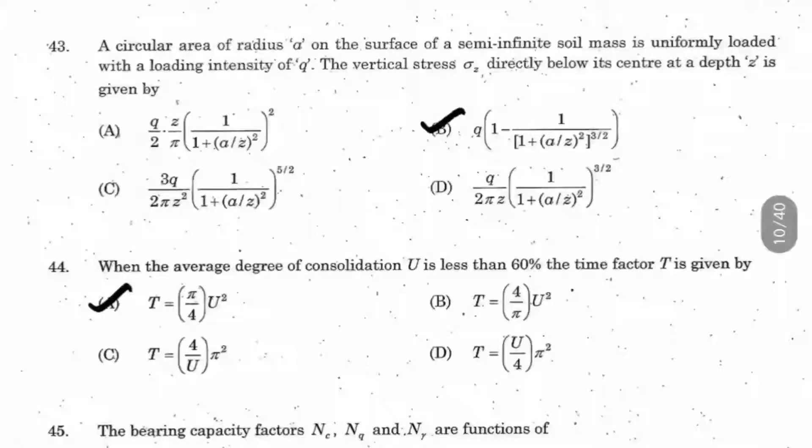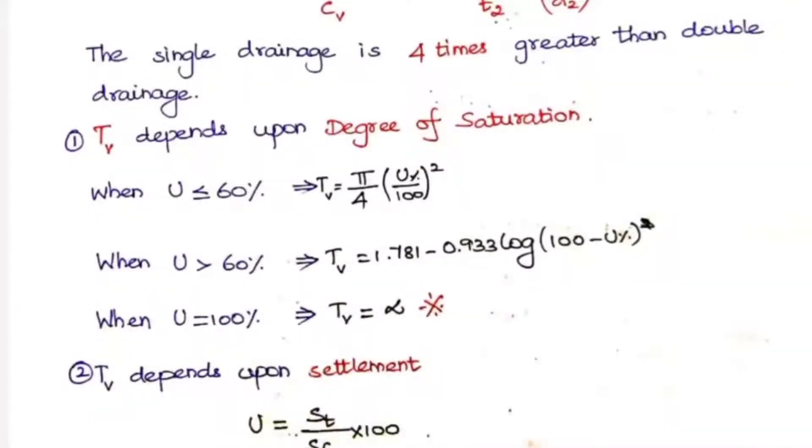Question 44: When the average degree of consolidation U is less than 60 percentage, the time factor T is given by what? We studied two values. When U is less than 60%, it's pi by 4 U square. When U is greater than 60 percentage, there's another formula: 1.781 minus 0.933 log of (100 minus U percentage). When U is 100 percentage, Tv is infinity - meaning 100 percentage consolidation takes infinite time, that's our assumption.